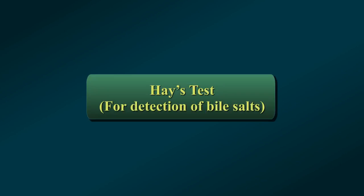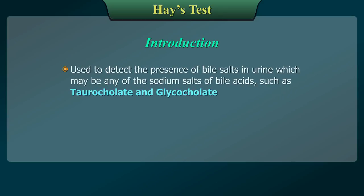Haze Test for Detection of Bile Salts. The Haze Test is used to detect the presence of bile salts in urine, which may be any of the sodium salts of the bile acids such as taurocholate and glycocholate.